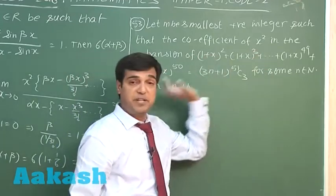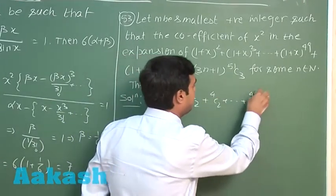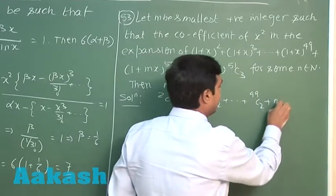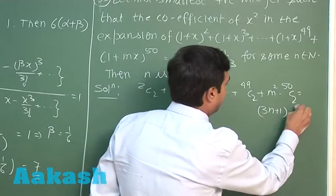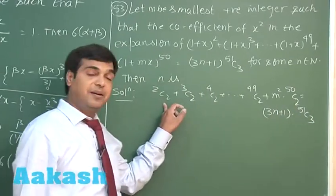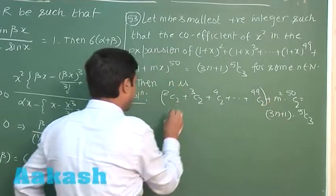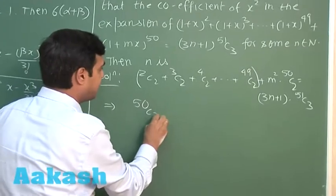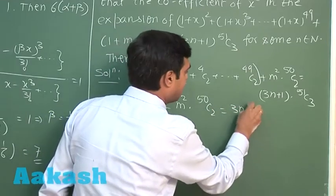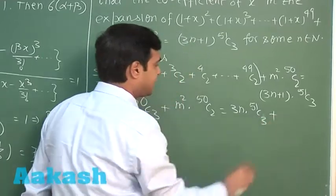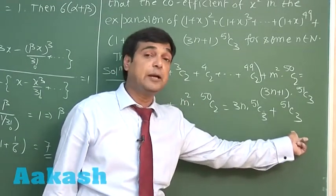Coefficient of x square in its expansion, we can write it as 2 C 2 plus 3 C 2 plus 4 C 2 and so on. This entire term can be written simply as 50 C 3 plus m square multiplied with 50 C 2 is equal to the given value. 2 C 2 we can read it as 1, so simply 3 C 3 plus 3 C 2 gives me 4 C 3 and so on. This entire term can be written simply as 50 C 3 plus m square 50 C 2 equals 3n times 51 C 3 plus 51 C 3. If we take this 50 C 3 here, 51 C 3 minus 50 C 3 meaning 50 C 2.